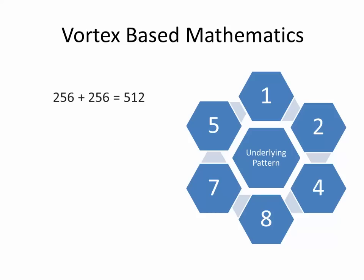256 plus 256 equals 512. 5 plus 1 plus 2 equals 8. 512 plus 512 equals 1024. 1 plus 0 plus 2 plus 4 equals 7.